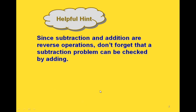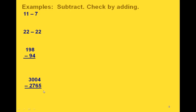Here's a helpful hint when doing subtraction problems: since subtraction and addition are reverse operations, don't forget that you can check a subtraction problem by adding. So if we take 11 and subtract 7, we get 4. And if we want to check that, we would add the 4 and the 7, and if we've done this correctly, we should get 11.